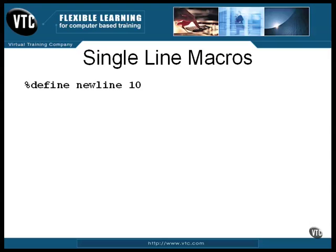The number 10 is the ASCII character line feed. It's used in Linux text files and by C to control the cursor position when displaying strings. In the Windows file system, the two-character sequence carriage return and line feed is used, but we're dealing with C, so a simple line feed does the trick.